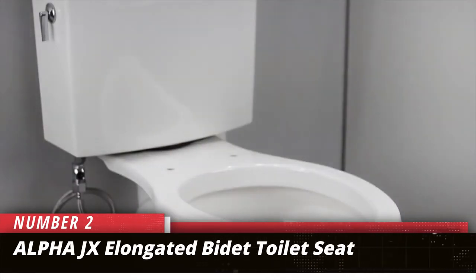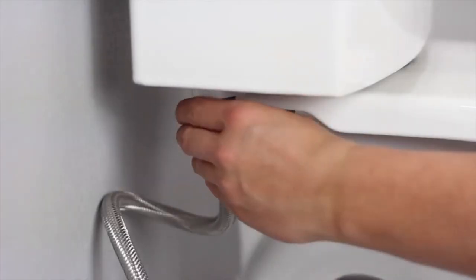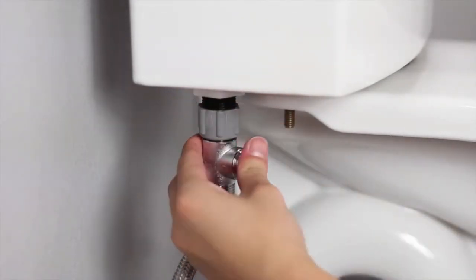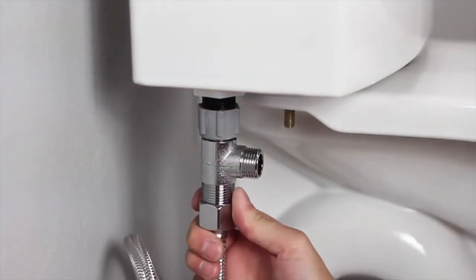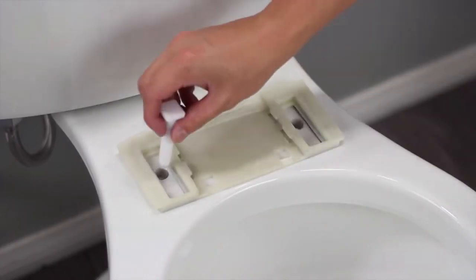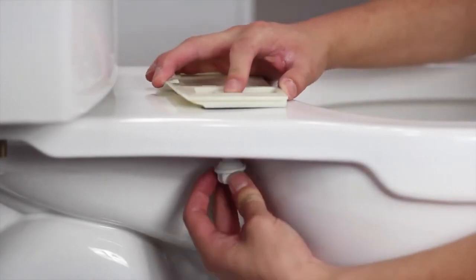Number 2. Alpha JX Elongated Bidet Toilet Seat. Bidets are a gentle and hygienic solution for older adults who might not be as nimble as they once were. This elongated bidet seat from Alpha has front and back aluminum nozzles to provide thorough cleaning. The seat comes with a remote control that highlights the current settings so there are no surprises where users can opt for the one-touch easy wash.